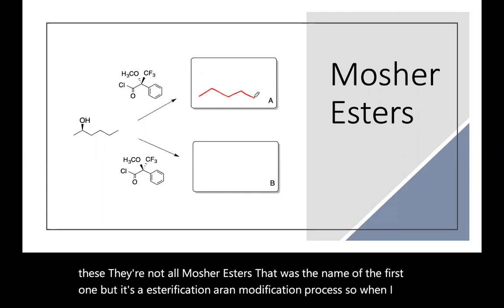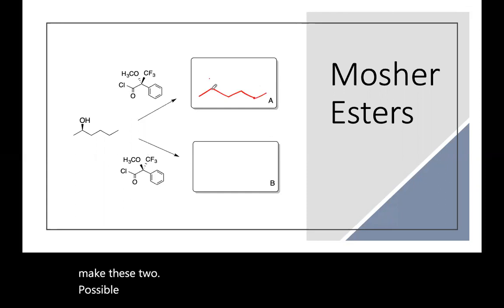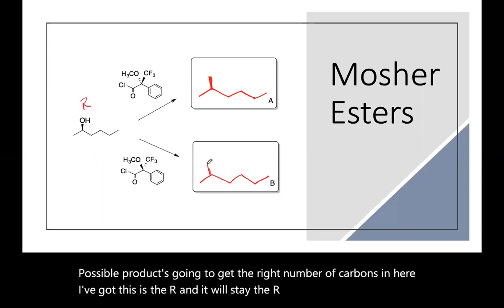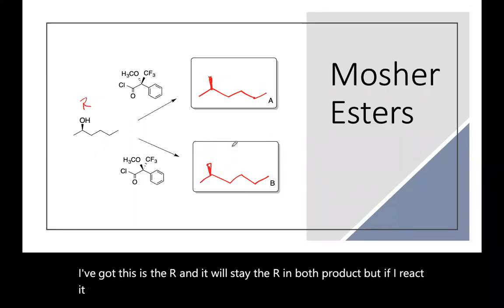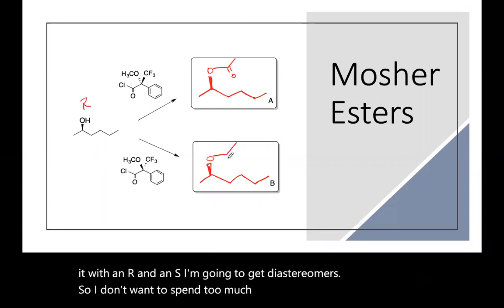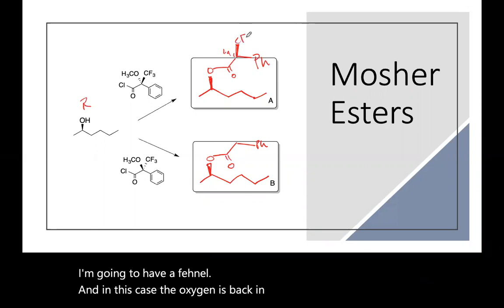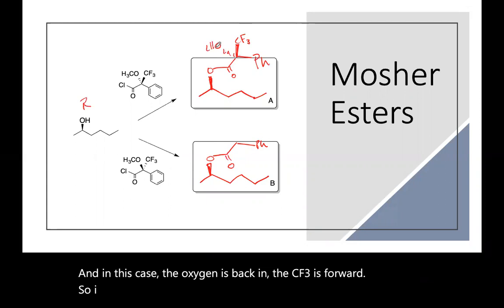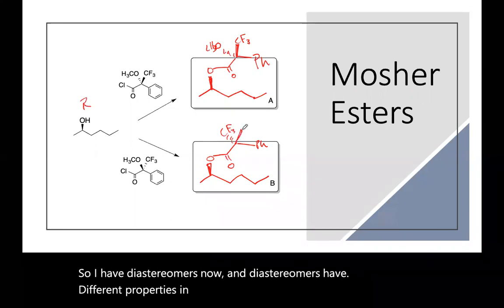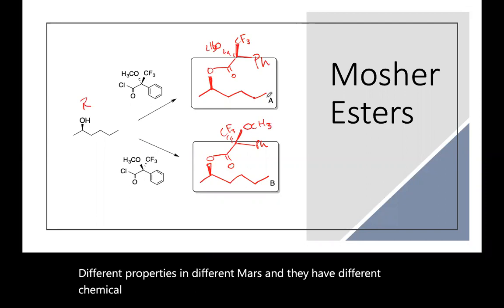So when I make these two possible products, let me get the right number of carbons in here, I've got this is the R and it will stay the R in both products, but if I react it with an R and an S, I'm going to get diastereomers. So I have diastereomers now and diastereomers have different properties and different NMRs and they have different chemical shifts. So this is a good way to look at the chemical shifts and use that to determine your stereochemistry. So we're going to walk through that.